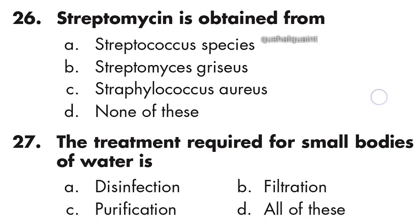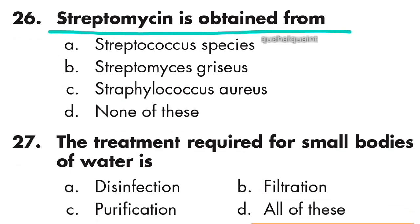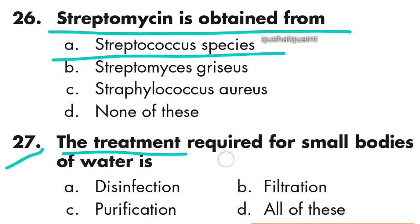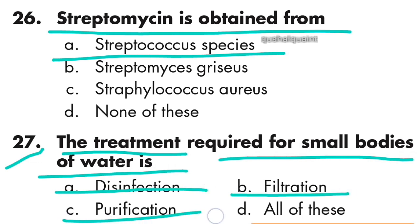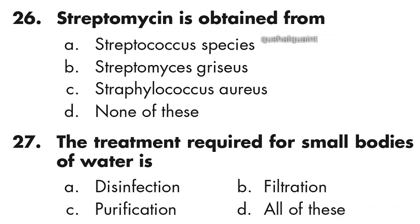Question 26: Streptomycin is obtained from Streptococcus species. Question 27: The treatment required for small bodies of water includes disinfection, filtration, and purification — all of these. Option D is right.